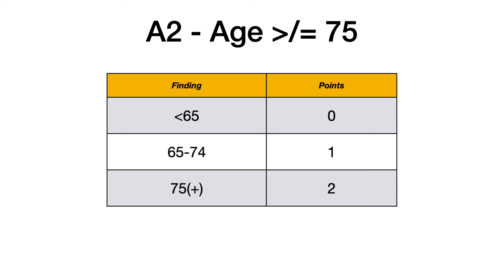Sometimes when you look at CHADS-VASC, they use two different A's: the first A awards two points if the patient is 75 years or older, and the second A awards one point if the patient is 65 to 74. For simplicity, just remember that the first A in CHADS is where all age-related points come in. If the patient is less than 65 (64 or younger), they get zero points; 65 to 74, one point; 75 or older, two points.